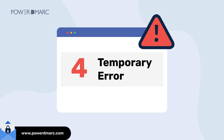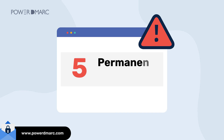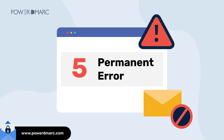However, if your Yahoo error code starts with 5, this can be worrying. Yahoo error codes starting with 5 indicate permanent errors that lead to permanent message rejections. In recent times, one popular reason for this error is not following Yahoo's email sender rules.